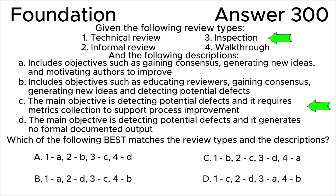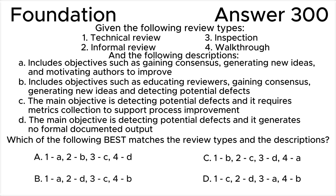Review type three — Inspection. This is the most formal review type and it follows the complete generic review process. The primary objective is to find the most anomalies, and other objectives include evaluating quality, building confidence in the work product, motivating and enabling authors to improve, and collecting metrics that can be used to enhance the software development lifecycle (SDLC), including the inspection process. The author cannot act as the review leader or scribe. This matches description C: the main objective is detecting potential defects and it requires metrics collection to support process improvement.